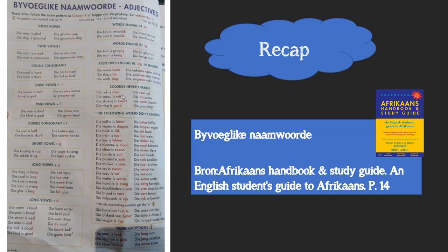Just something here as well: colors in Afrikaans never change in a sentence as an adjective. So if 'die rok is rooi', it's 'die rooi rok'. If 'die sneeu is wit', 'die wit sneeu'. You see that the color stays the same. But exception: 'goud' becomes 'goue'. The same rule applies — the long vowel — however it doesn't get a deelteken e.